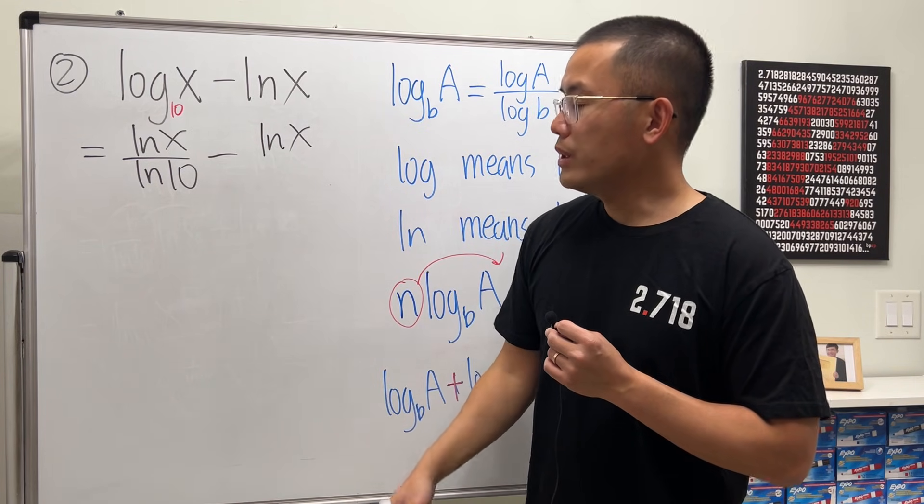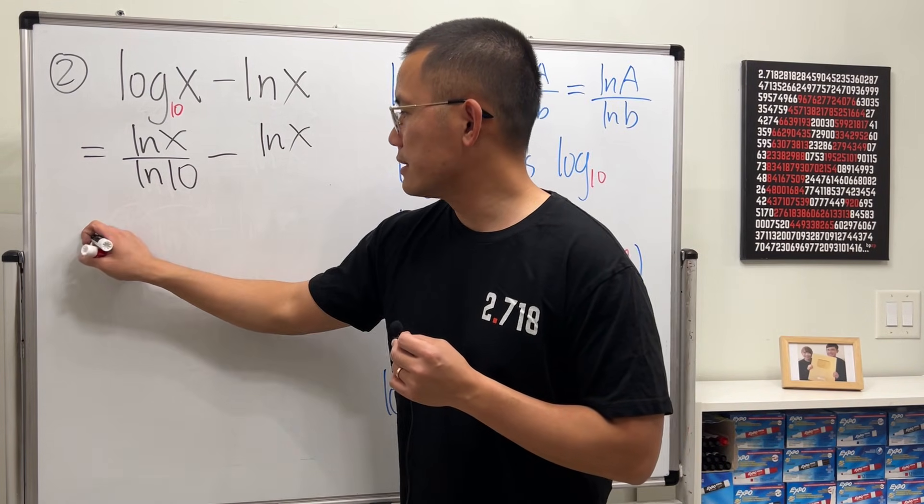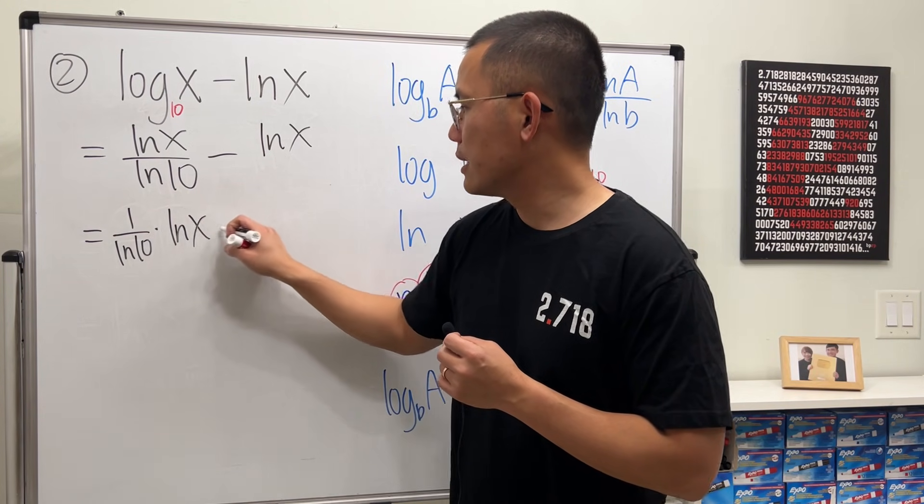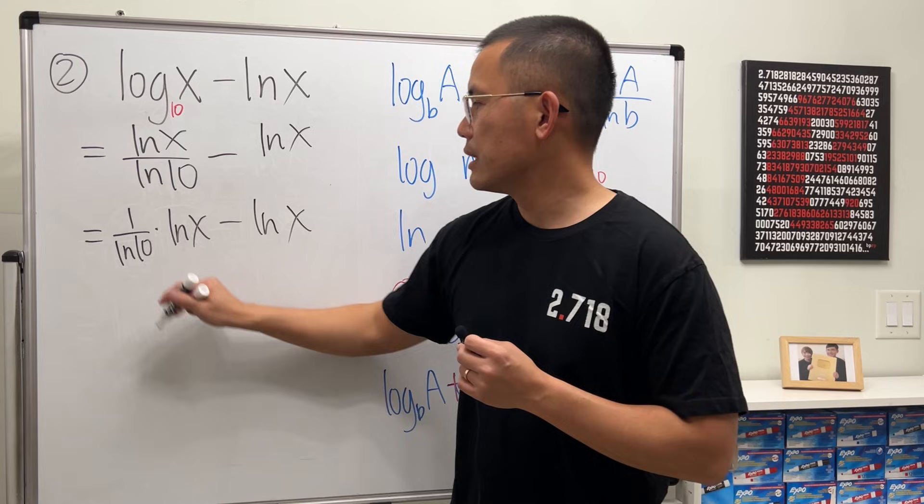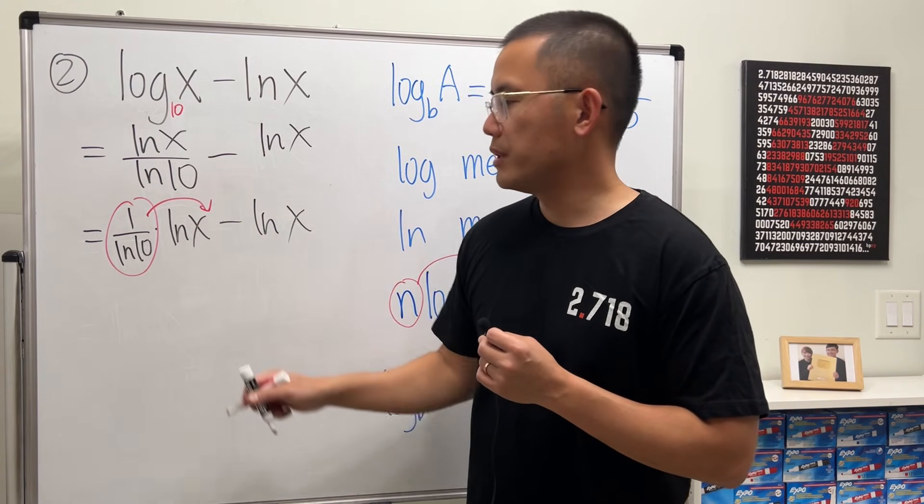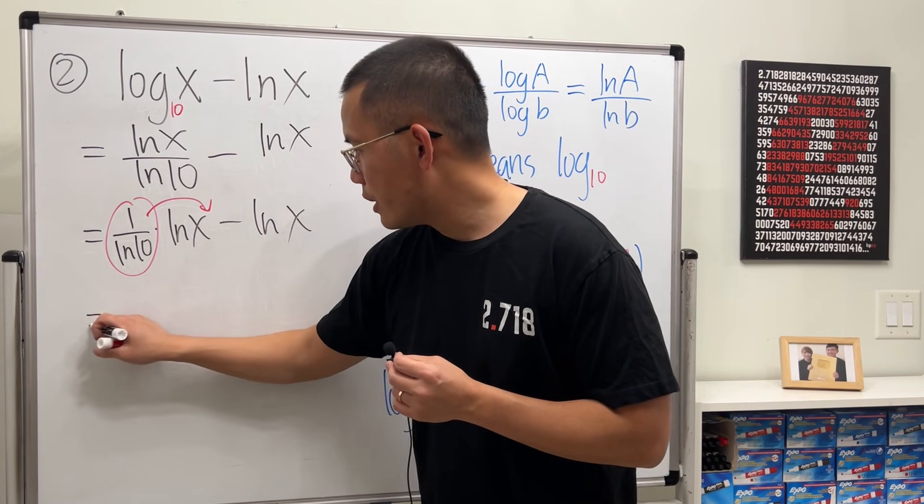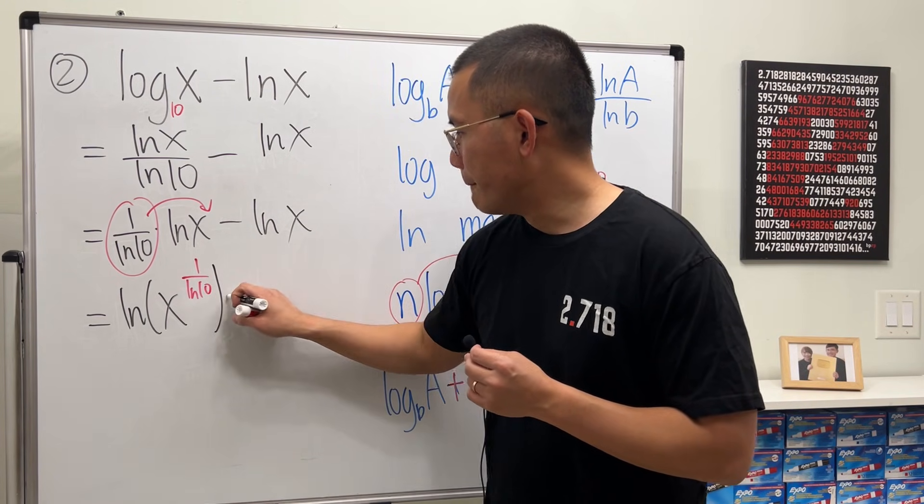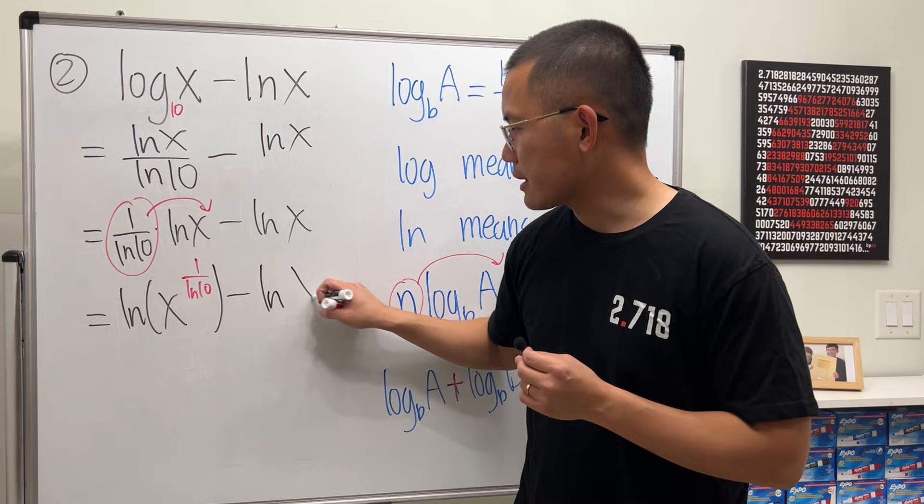And then we can do the property from earlier. Let's look at this as 1 over ln 10 times ln x minus ln x. Put the number up here to become a power, so ln of x to the 1 over ln 10 minus ln x. Now we have a minus.